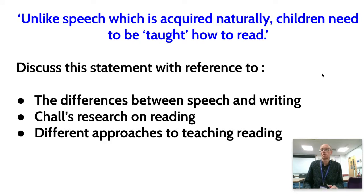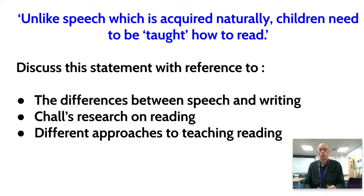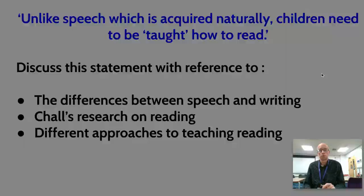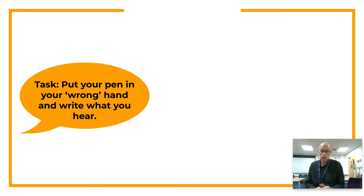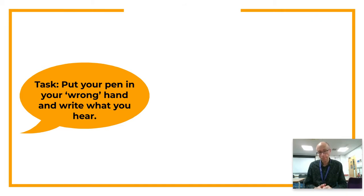Unlike speech, which is acquired naturally, children need to be taught how to read. Okay, we're now going to go on into children's writing. So do the following: get a piece of paper, get a pen and hold the pen in your wrong hand. You're going to be doing a dictation activity where you just write down exactly what I say, but you're going to be doing it with your other hand. Are you sitting comfortably? Then we shall begin.